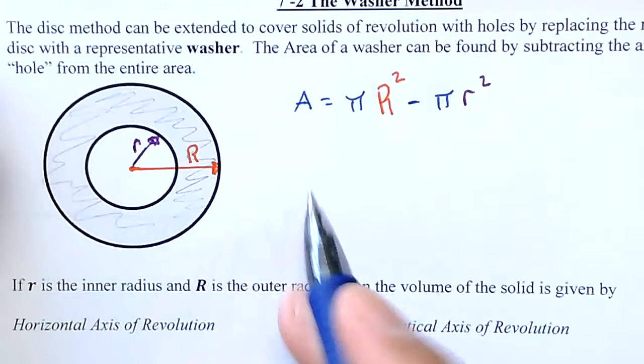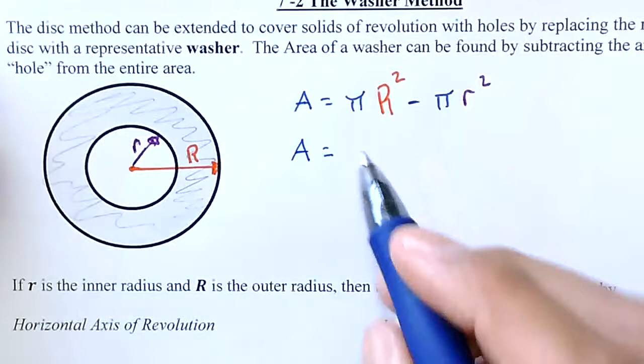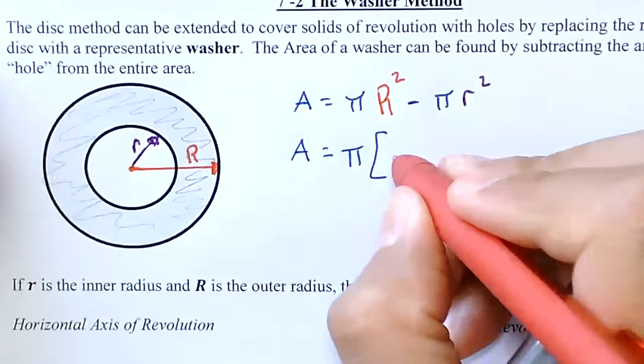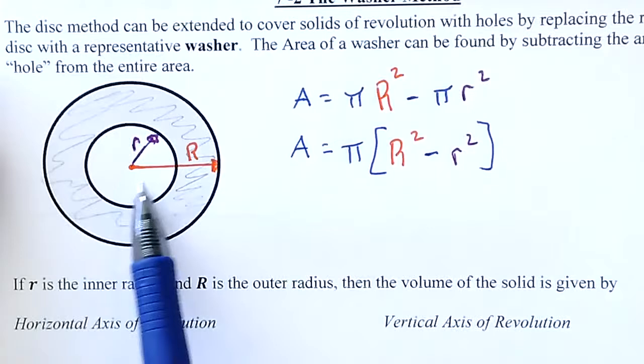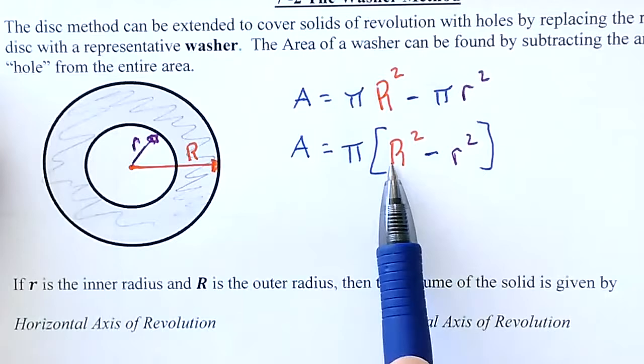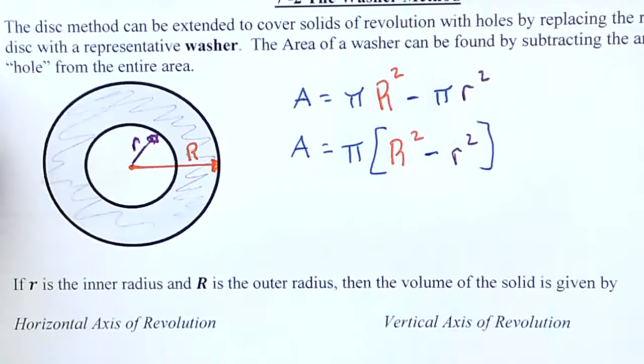With a little algebra, I can factor out pi, and I'm left with big R squared minus little r squared, giving me the area of the shaded region. In the previous section we had a disk — there was no hole in the middle, so we used pi r squared. For a washer, we have to account for that hole, so we have a big radius and a little radius.